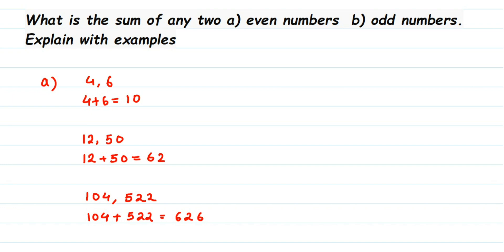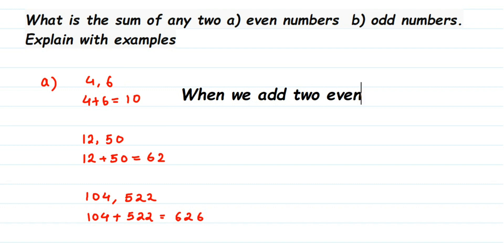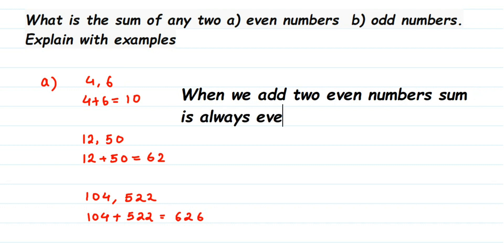So the conclusion for the first question: when we add two even numbers, the sum is always even. The answer we get is always an even number. Now we're going to do the same thing for odd numbers and see what we get. That was the first question — let's move on to the second one.